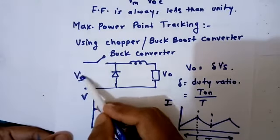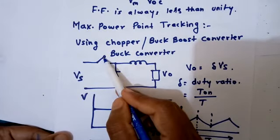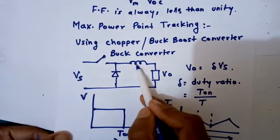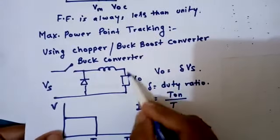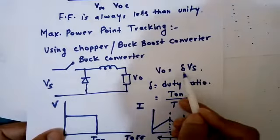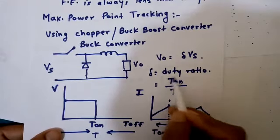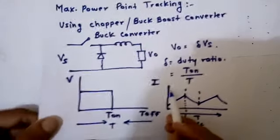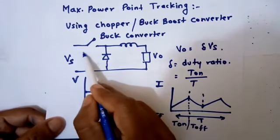Here we can see the diagram of the buck converter. Supply voltage is there. There is a switch connected—the switch can be a high-frequency power semiconductor device like MOSFET, IGBT, or SCR. One diode is connected here, one inductor is connected here, and this is the load. We can see the output voltage of this circuit will equal delta times VS. VS is the supply voltage. Delta is the duty ratio, decided by Ton by T. Ton is the on-time period, and T is the complete time period.